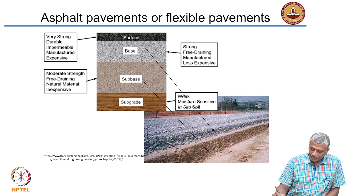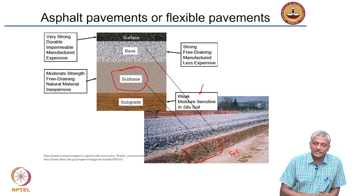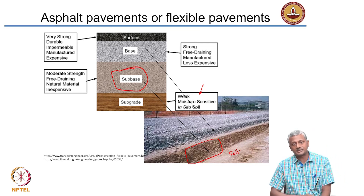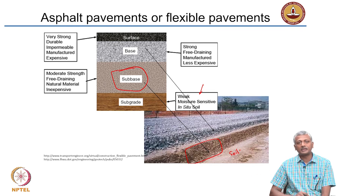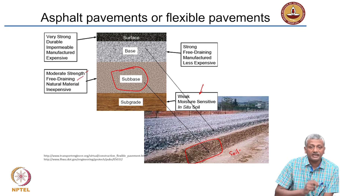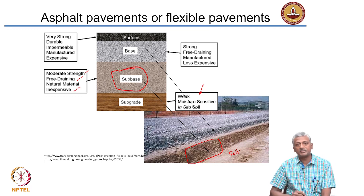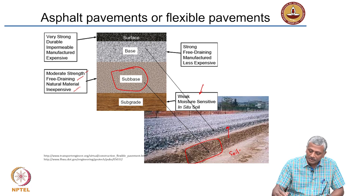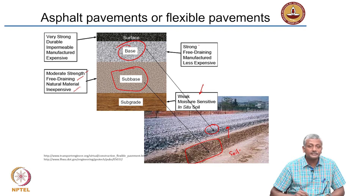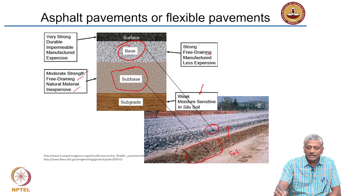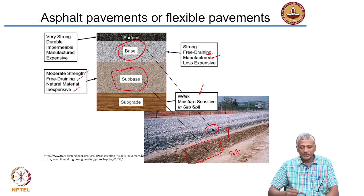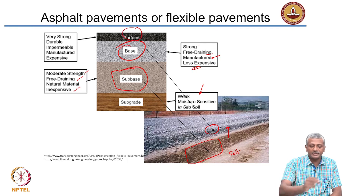Looking at the pavement cross-section pictorially: the soil subgrade at the bottom may be weak and moisture sensitive, or strong — its quality must be determined before deciding on the number of layers and their thickness. The sub-base has moderate strength, is free-draining, and is made with natural materials like sand or soil, making it inexpensive. The granular base course above it is strong, free-draining, manufactured by placement and compaction, and less expensive than the asphalt concrete layer on top.